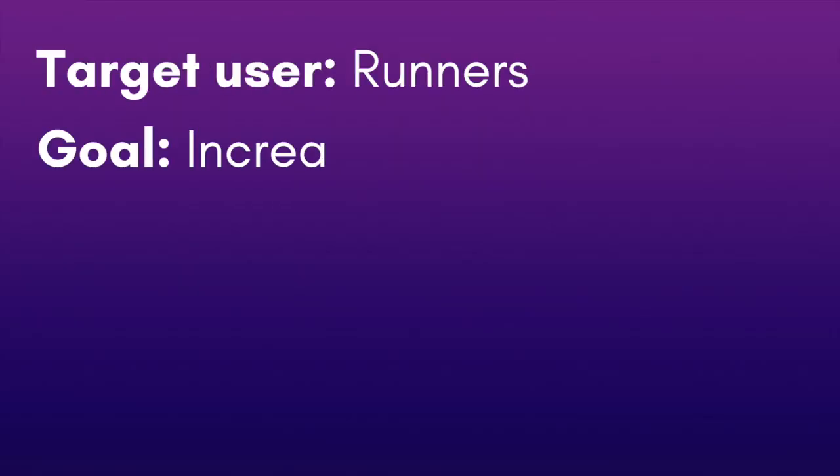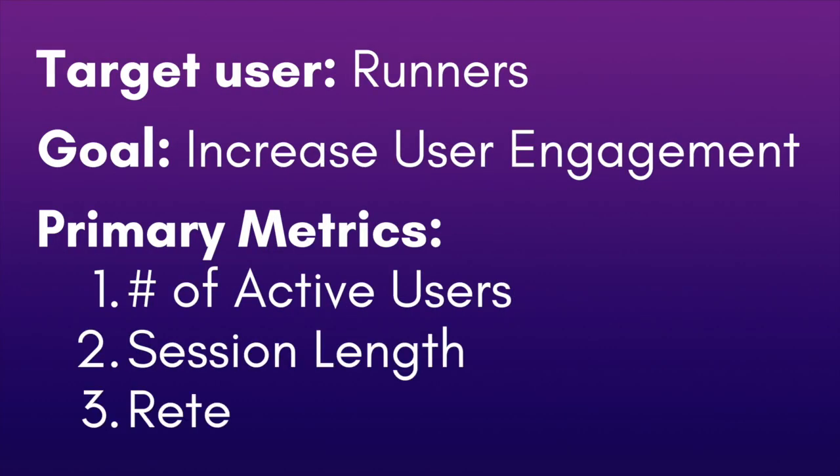Keeping in mind that our target users are runners, and the goal of the app is to equip runners with all that they need so they can focus on the run, a good goal for us will be to increase user engagement. Specifically looking at three primary metrics, such as the number of active users, the session length, and the retention rate. This can provide us insight into how well users are engaging with the NRC app and how often they're using it to track their runs versus other competitor apps.